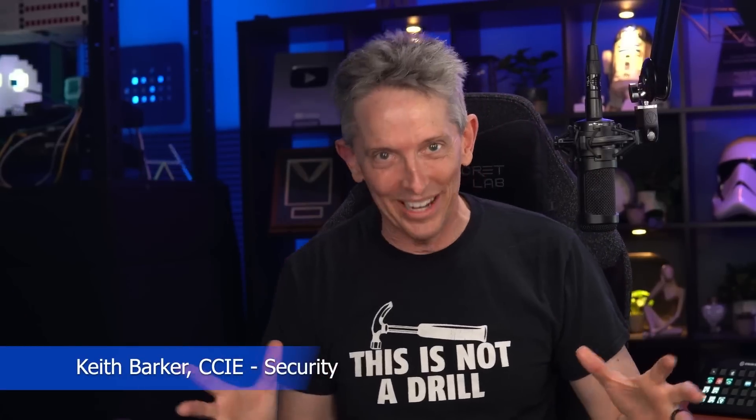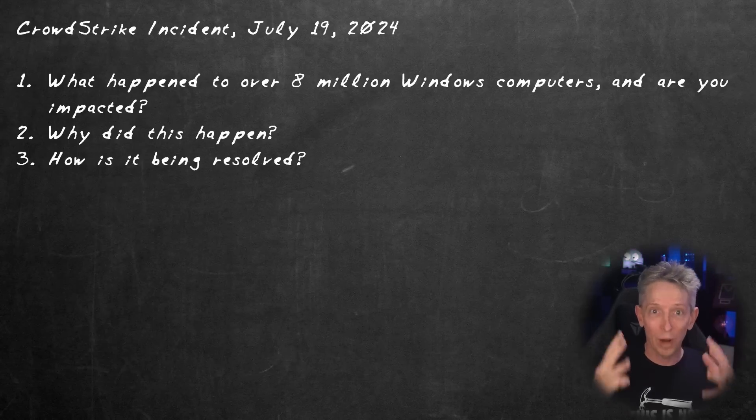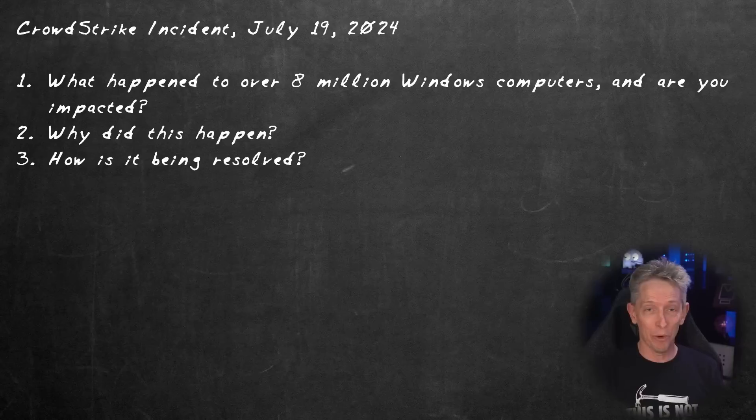Hello and welcome. My name is Keith Barker and I'd like to give you a high-level overview of what you need to know about the CrowdStrike incident that happened in July 2024. These are the three main questions I'd like to cover with you right now. First of all, what happened? Secondly, why did it happen? And third, fairly important, people are still cleaning up after this, how do we resolve it?